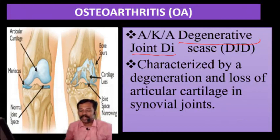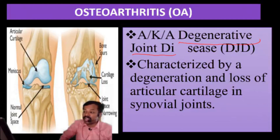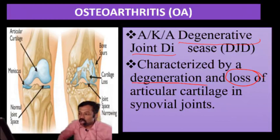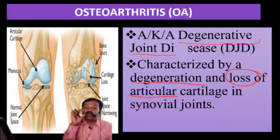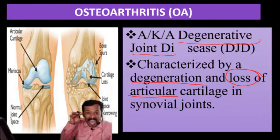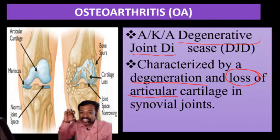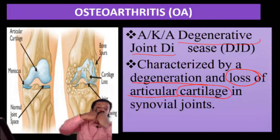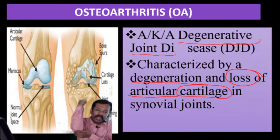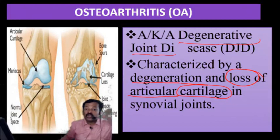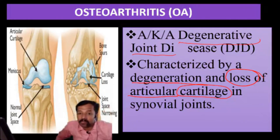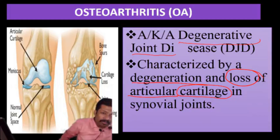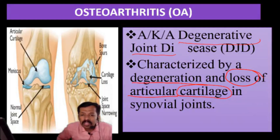So osteoarthritis is otherwise known as degenerative joint disease. It is characterized by degeneration and loss of articular cartilage — the cartilage in between the joint which exists for smooth movement and for avoiding friction. That cartilage is destroyed, which is simply osteoarthritis.